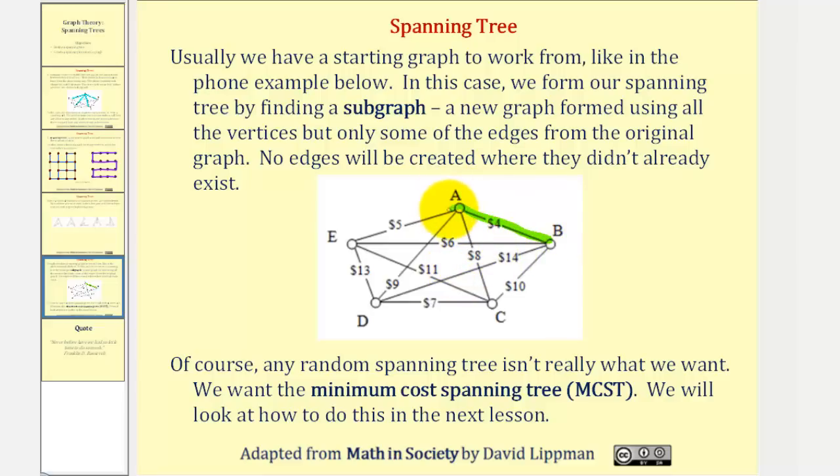as well as edge AE, because they have the least weight. Notice how we couldn't use edge BE, because we'd have a circuit formed. But we could use edge AC and edge CD to form a spanning tree.